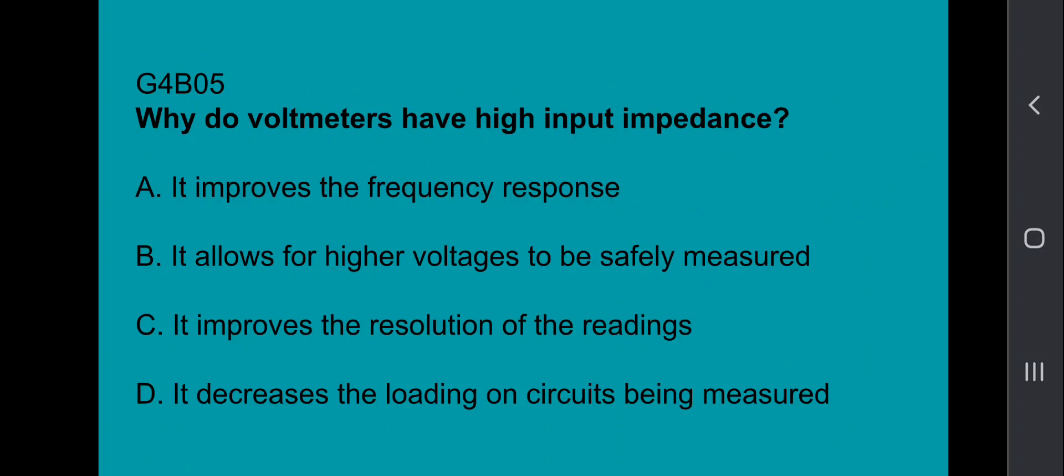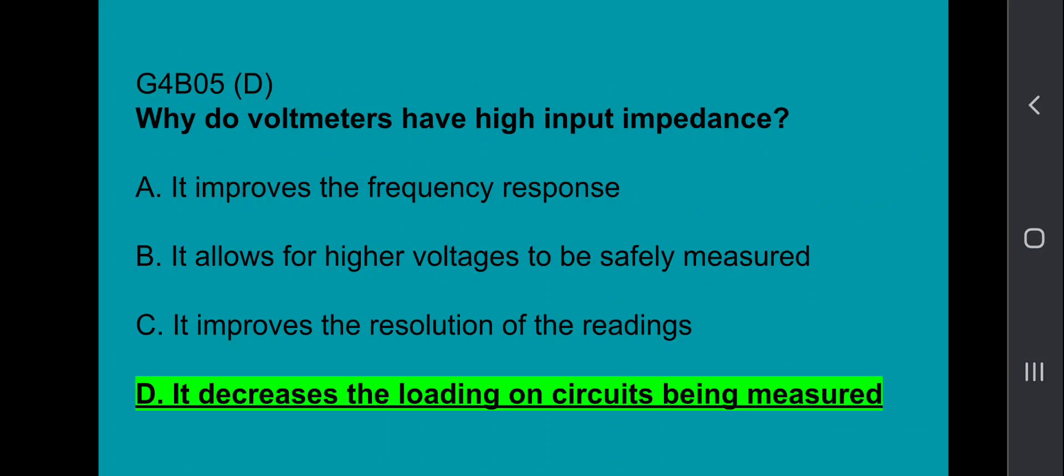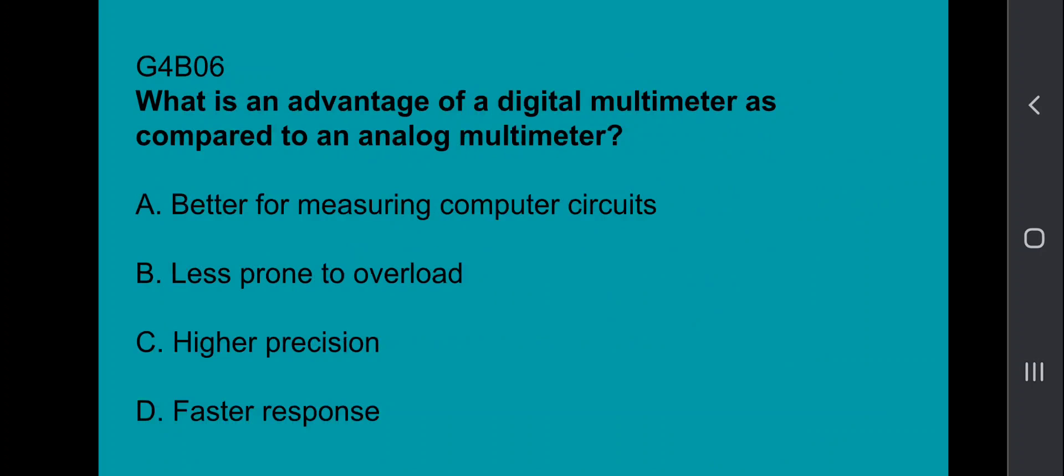G4B05, why do voltmeters have high input impedance? It decreases the load on circuits being measured. G4B06, what is the advantage of a digital multimeter compared to an analog multimeter? Higher precision.